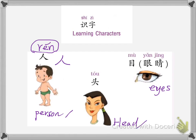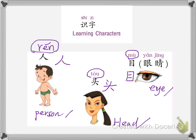This is head. The pronunciation for head is toh, toh. The writing for head is: this is the first stroke, this is the second stroke, this is the third stroke, this is the fourth stroke, and this is the fifth stroke. Just remember, the closing stroke is always last.